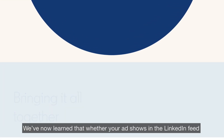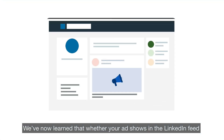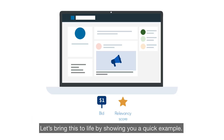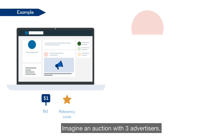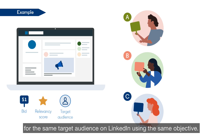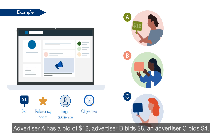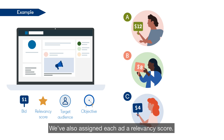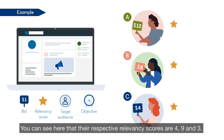Bringing it all together, we've now learned that whether your ad shows in the LinkedIn feed is a function of both your bid and relevancy score. Let's bring this to life with a quick example. Imagine an auction with three advertisers — A, B, and C — all competing with each other for the same target audience on LinkedIn using the same objective. Advertiser A has a bid of $12, Advertiser B bids $8, and Advertiser C bids $4. Each ad is also assigned a relevancy score: their respective relevancy scores are 4, 9, and 3.